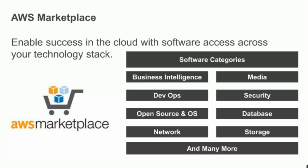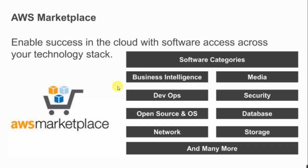Apart from the operating system, AWS has a Marketplace where you can find ready-made software in different categories. It is called the AWS Marketplace — enabling success in the cloud with software access across your technology stack. Categories include Business Intelligence, Media, DevOps, Security, Open Source Operating Systems, Database, Network and Storage, and many more. There are numerous ready-made solutions available for all these categories.